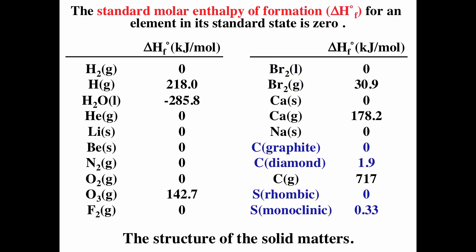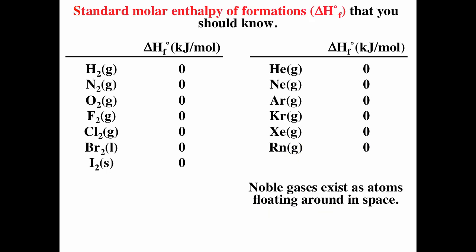The structure of solids also matters. Carbon graphite is more stable than carbon diamond, so carbon graphite is the element in standard state. For sulfur, rhombic and monoclinic are two solid structures, and rhombic is more stable, making it the element in standard state.